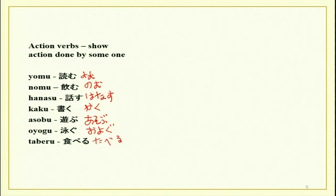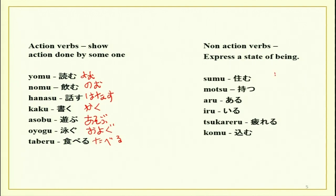Action verbs show action done by someone or by the subject. Examples include yomu, nomu, hanasu, kaku, asobu, oyogu, and taberu. Non-action verbs, on the other hand, express a state of being — some state that you are actually living or are in. Examples of non-action verbs are sumu, motsu, aru, iru, tsukareru, and komu.